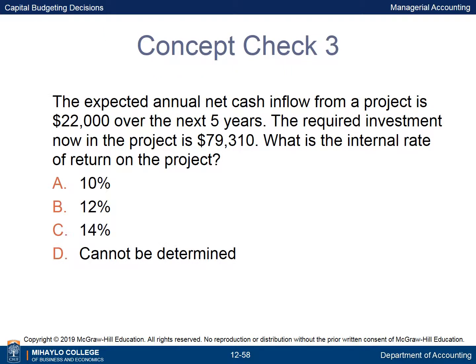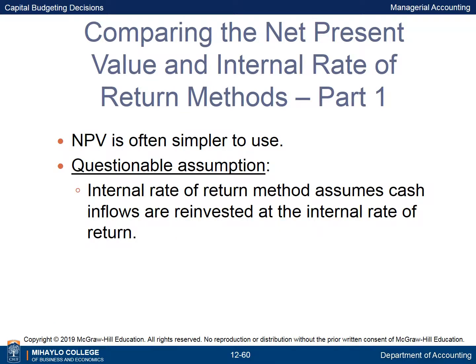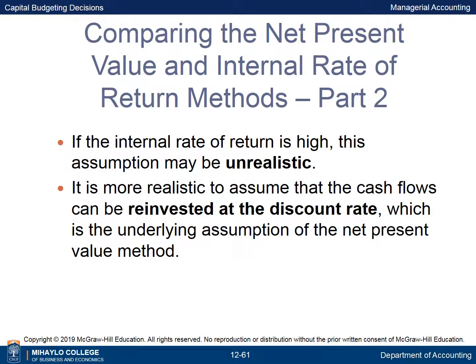The expected annual net cash inflow from a project is $22,000 over the next 5 years, with a required investment of $79,310. The IRR factor is $79,310 divided by $22,000 equals 3.605, which corresponds to a 12% interest rate over 5 years. The Net Present Value method is often simpler to use. The IRR method makes a questionable assumption that cash inflows are reinvested at the IRR; if the IRR is high, this may be unrealistic. It is more realistic to assume reinvestment at the discount rate, which is the assumption underlying the NPV method.